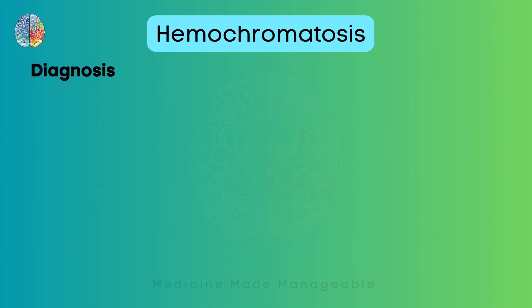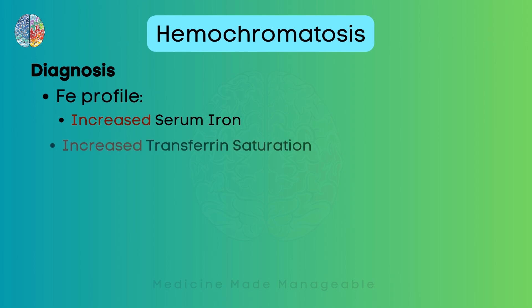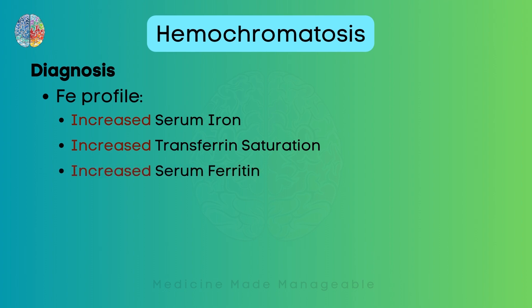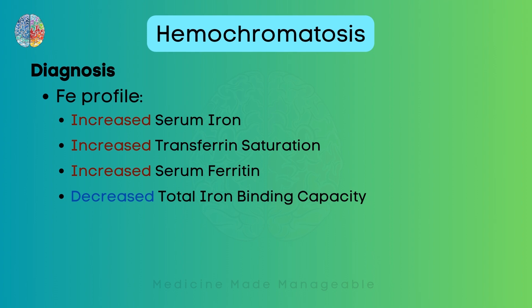Now how are you going to diagnose this condition? We will look for the iron profile where we will see increased serum iron and increased transferrin saturation. Transferrin is a protein which transports iron, so if there is an increased amount of iron in the body, all the available transferrin will be saturated — that's why there is increased transferrin saturation. There will also be increased serum ferritin, which is a protein that stores iron. And finally, there will be decreased total iron binding capacity.